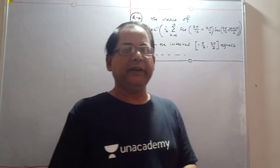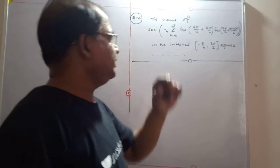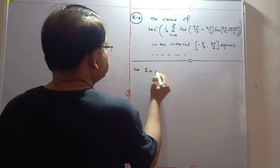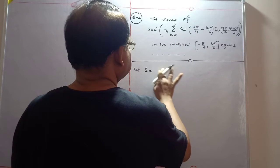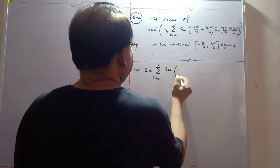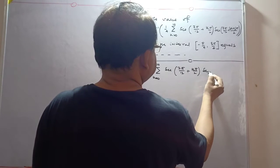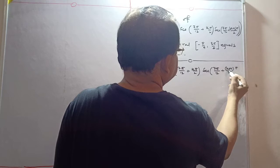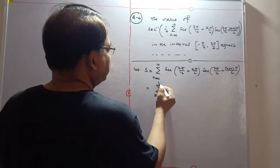Hello, good morning my dear friends. Today the question asks for the value of the summation S in a given interval. Let S be equal to the summation from k=0 to 10 of sec(7π/12 + kπ/2).